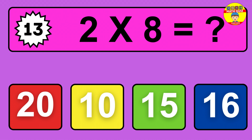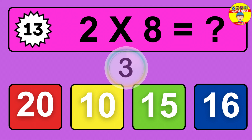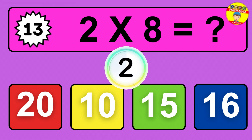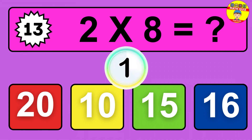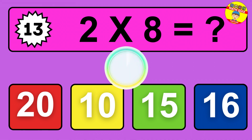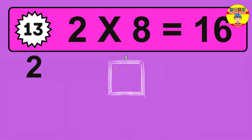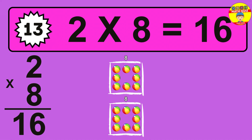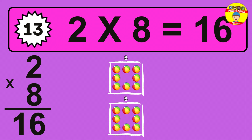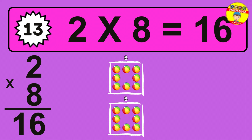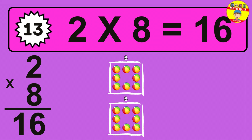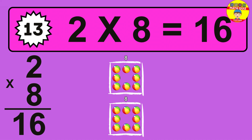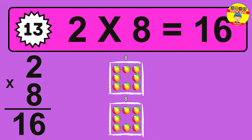Question 13. 2 times 8 equals what? The answer is 2 times 8 is 16. To calculate, we have 2 groups with 8 balls each one. So, how many balls do we have? 16 balls.